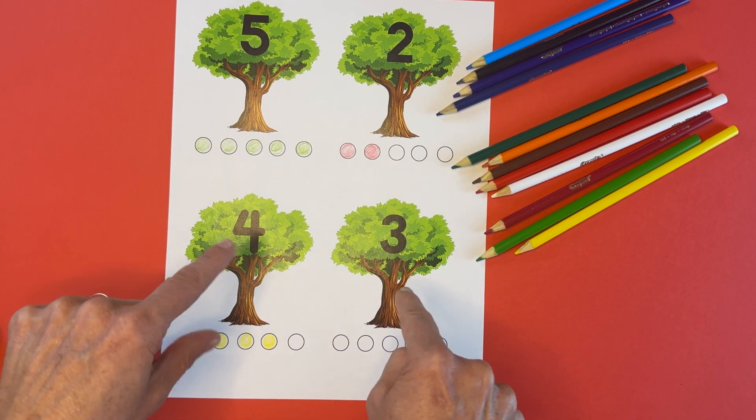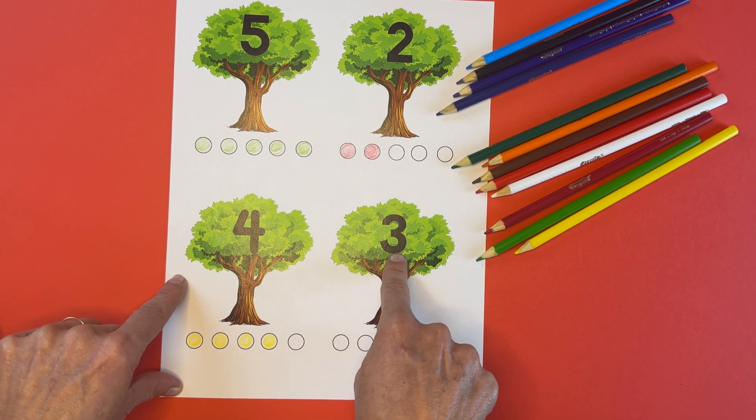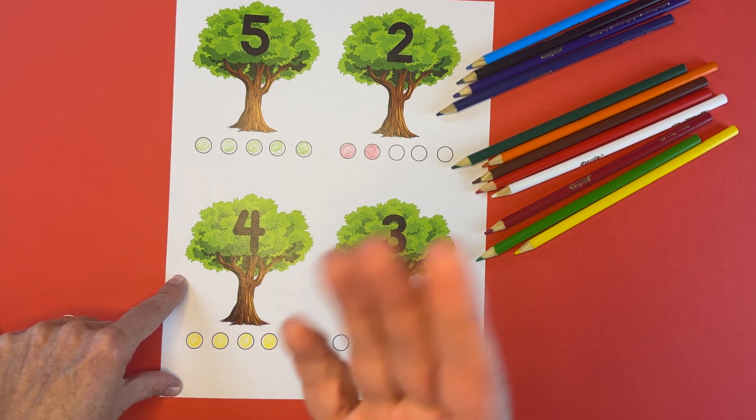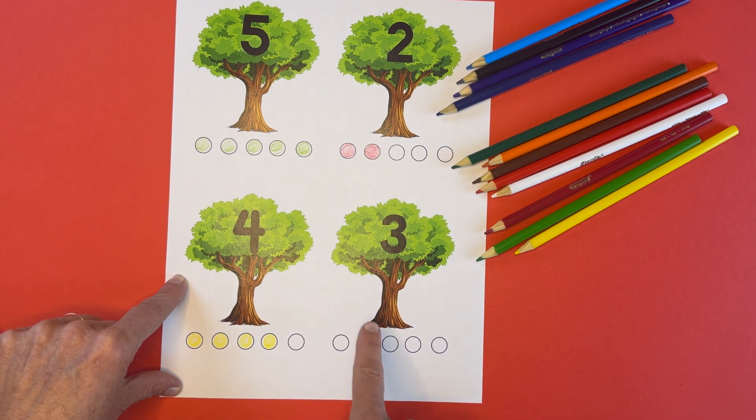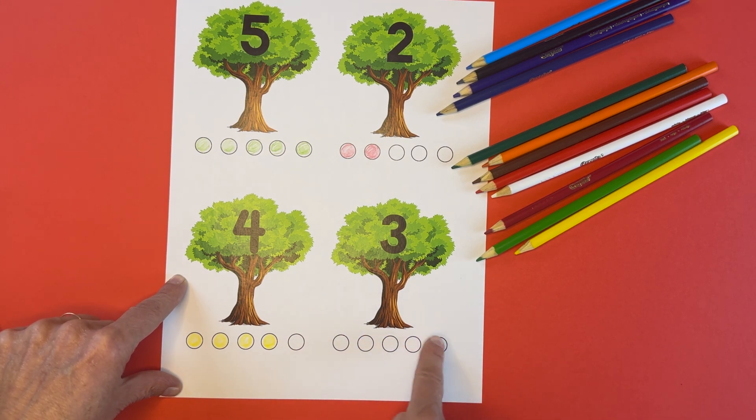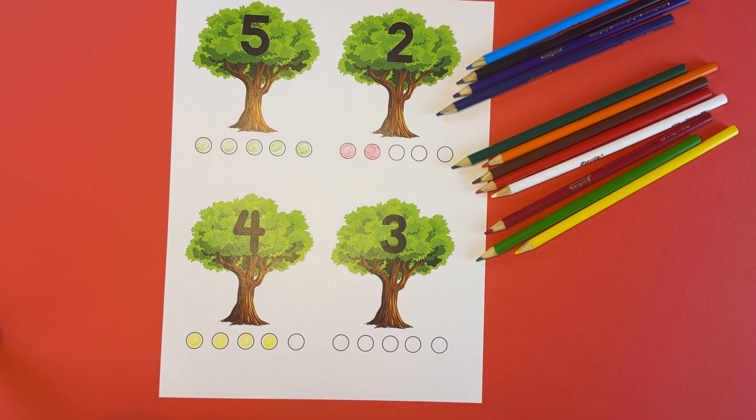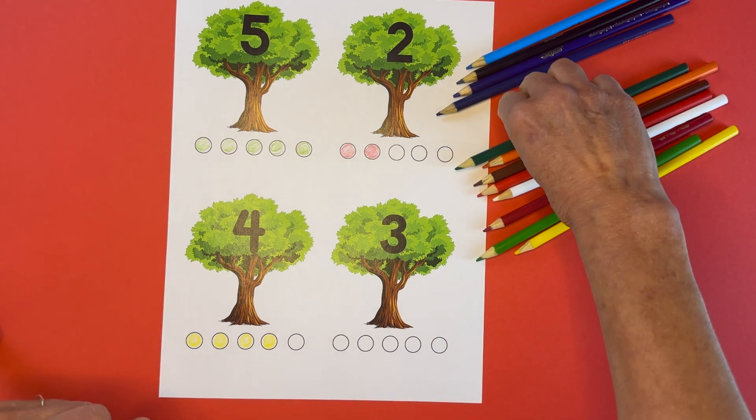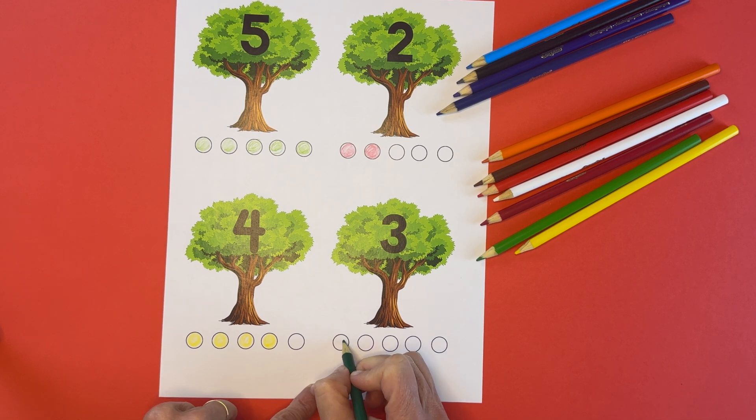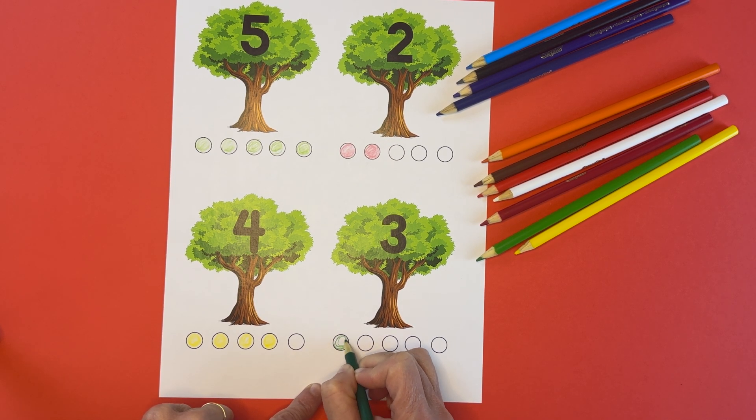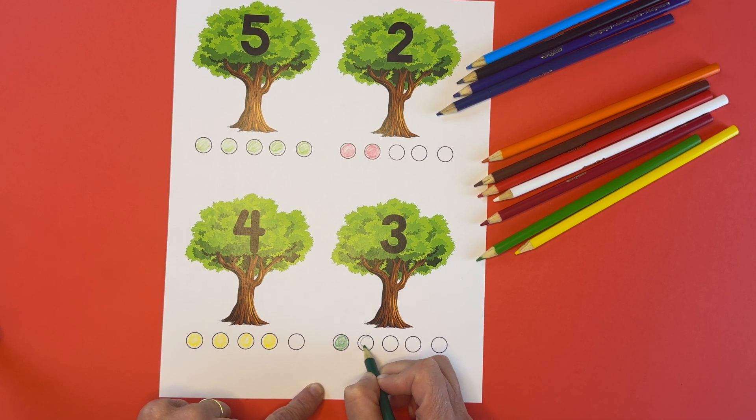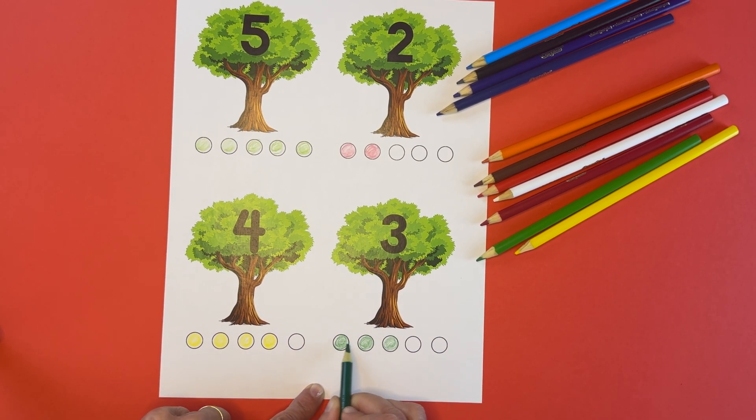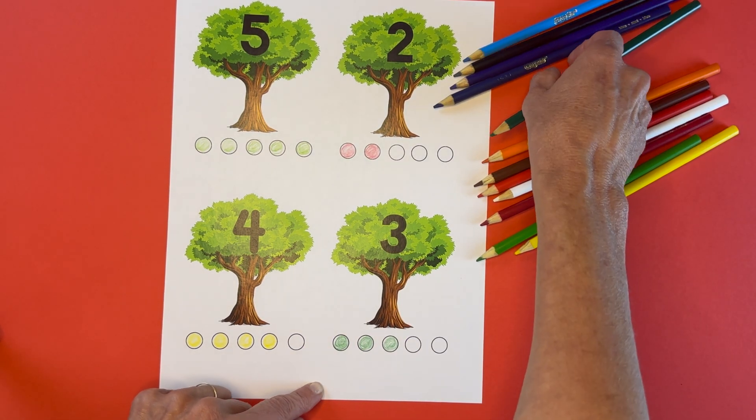And then the last one on this page, we have the number three tree. Hey, that rhymes. Three tree, three tree. All right. We're going to count out three apples and color them in. I think just for fun, I'm going to do another green one, but I'm going to do dark green. Let's see if we can tell a difference. One. Oh yeah, a little bit. Two and three. Okay. Count with me. Let's make sure. One, two, three green apples under the number three apple tree.